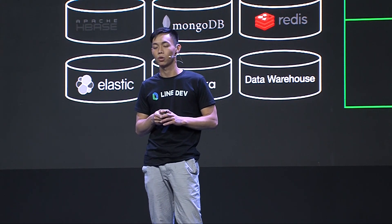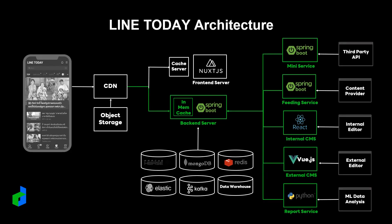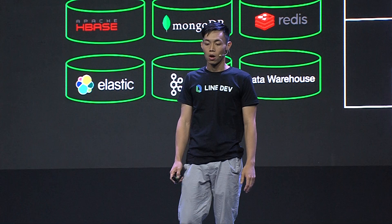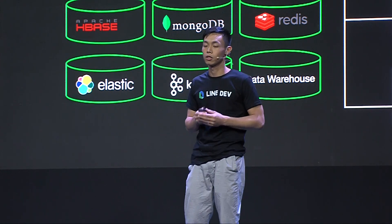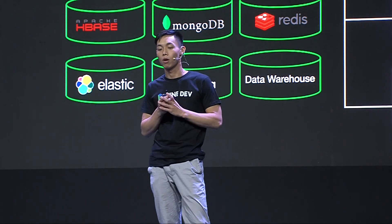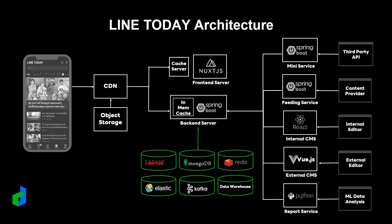Internal CMS is a content management system for our internal editors to set up the page. External CMS is for external editors to edit the news itself. Our report service will process data with some machine learning analysis. The benefits of microservices are faster build and faster minimum deployment, easier recovery from broken services, and easy setup or cloning of new services. We need to select the database that supports the right structure, size, and speed to meet the needs of our application, and depending on various services in Line Today, we need more than one type of database.